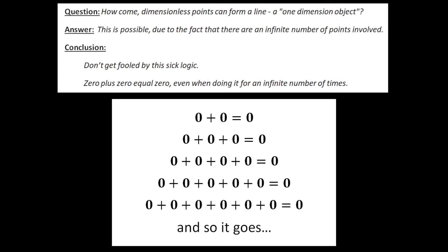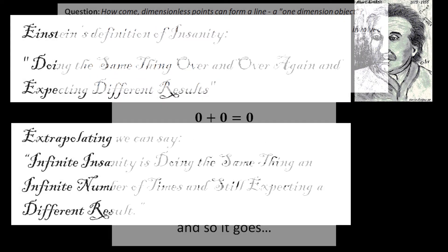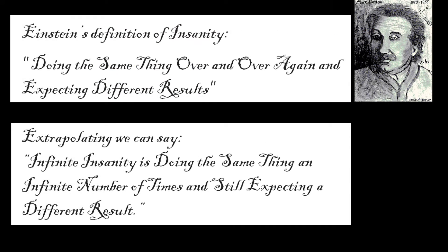Don't get fooled by this cyclogic. From differential calculus we know that one cannot get something from nothing. 0 plus 0 equals 0, even when doing it for an infinite number of times. Do you remember Einstein's definition of insanity? Doing the same thing over and over again and expecting different results. Extrapolating we can say, infinite insanity is doing the same thing an infinite number of times and still expecting a different result.